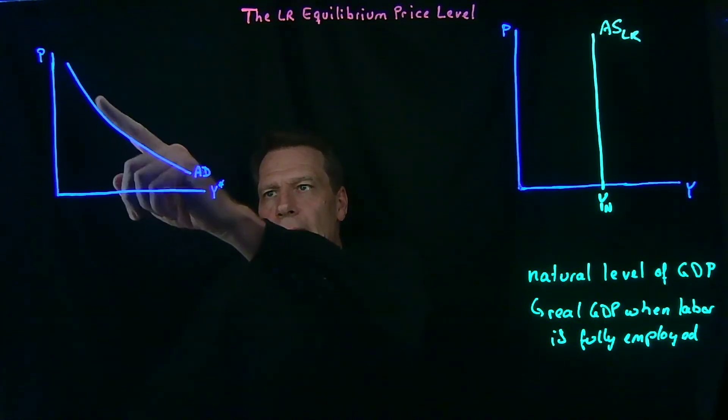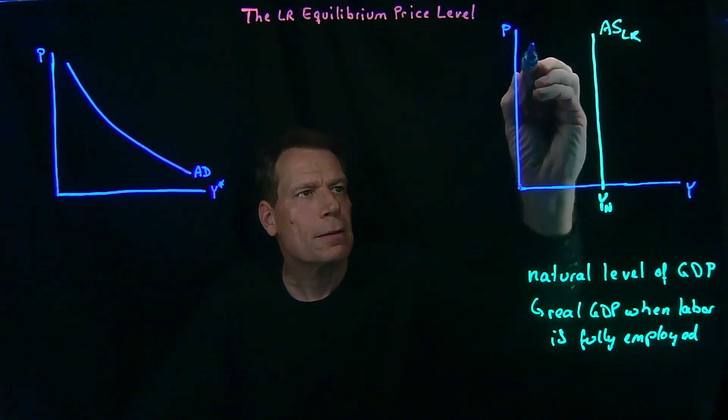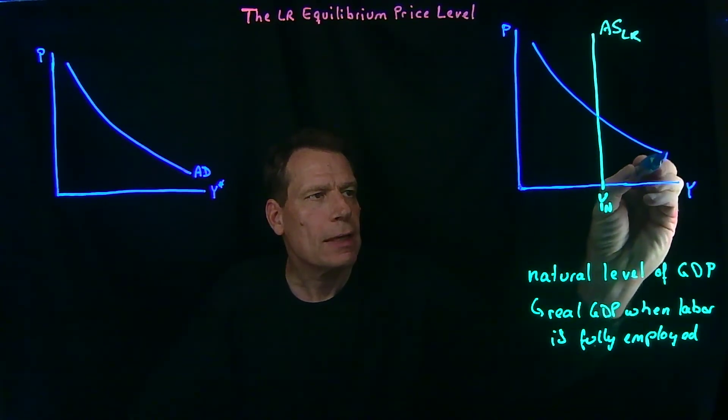So now we just need to take the aggregate demand curve and put it in this picture. When we do that, we get an intersection.